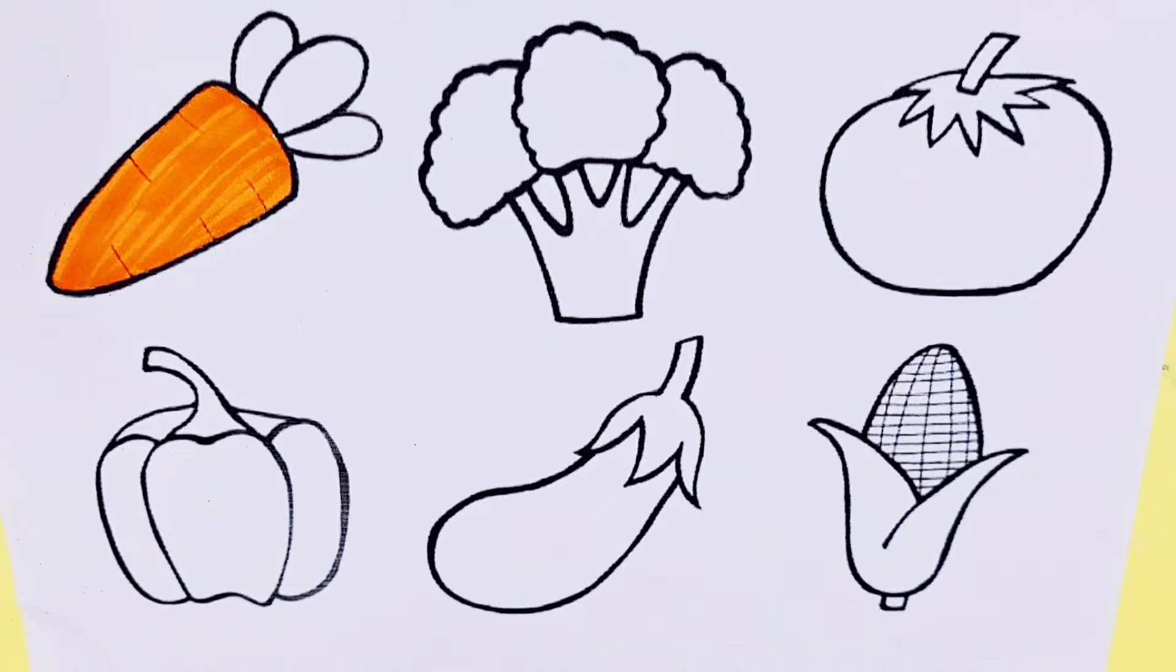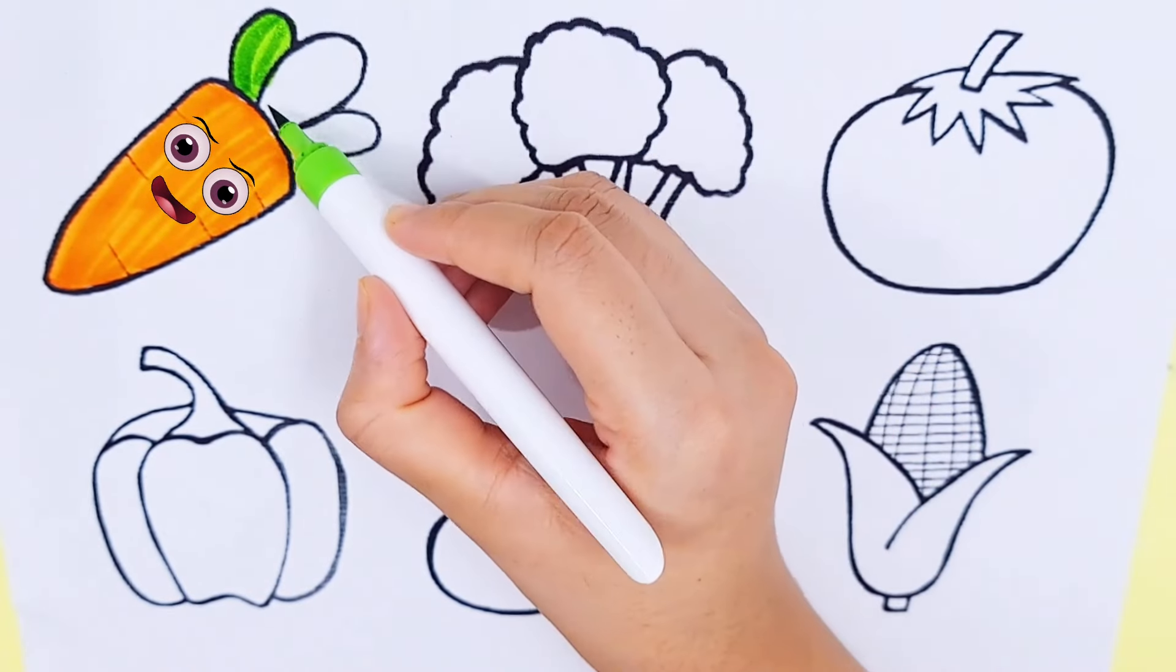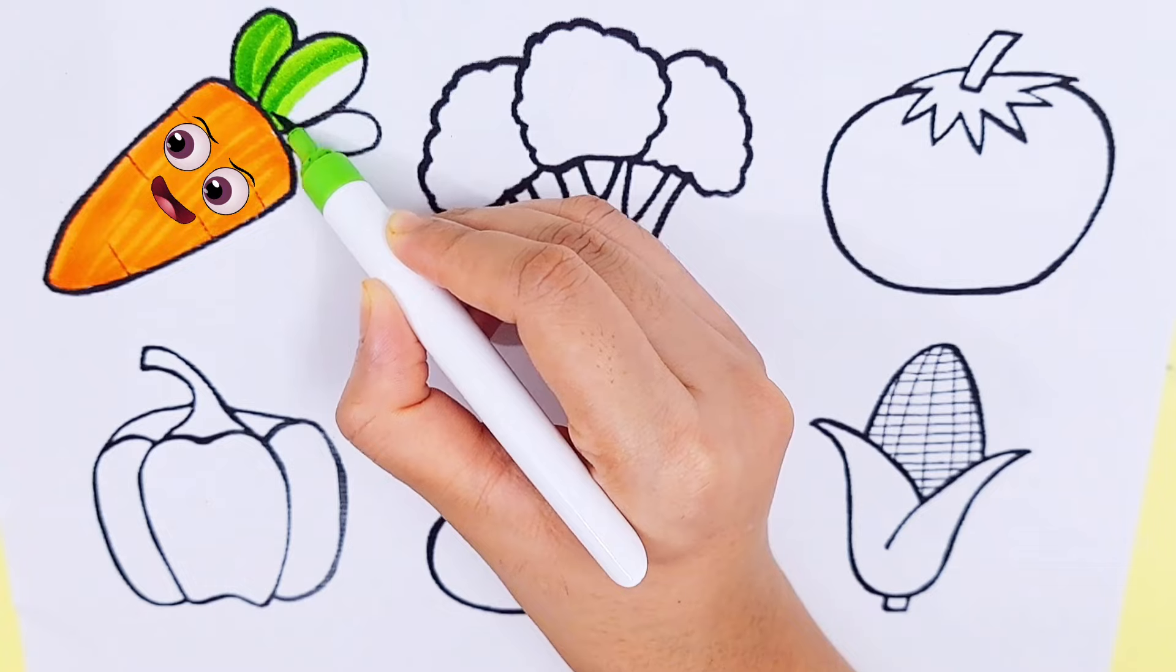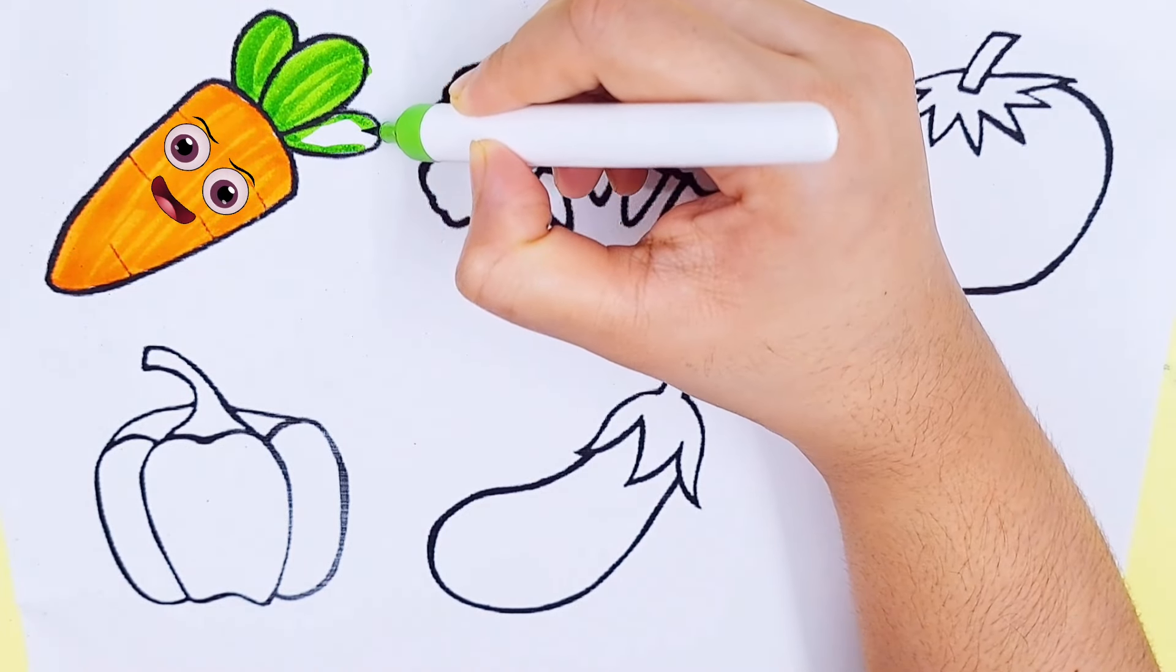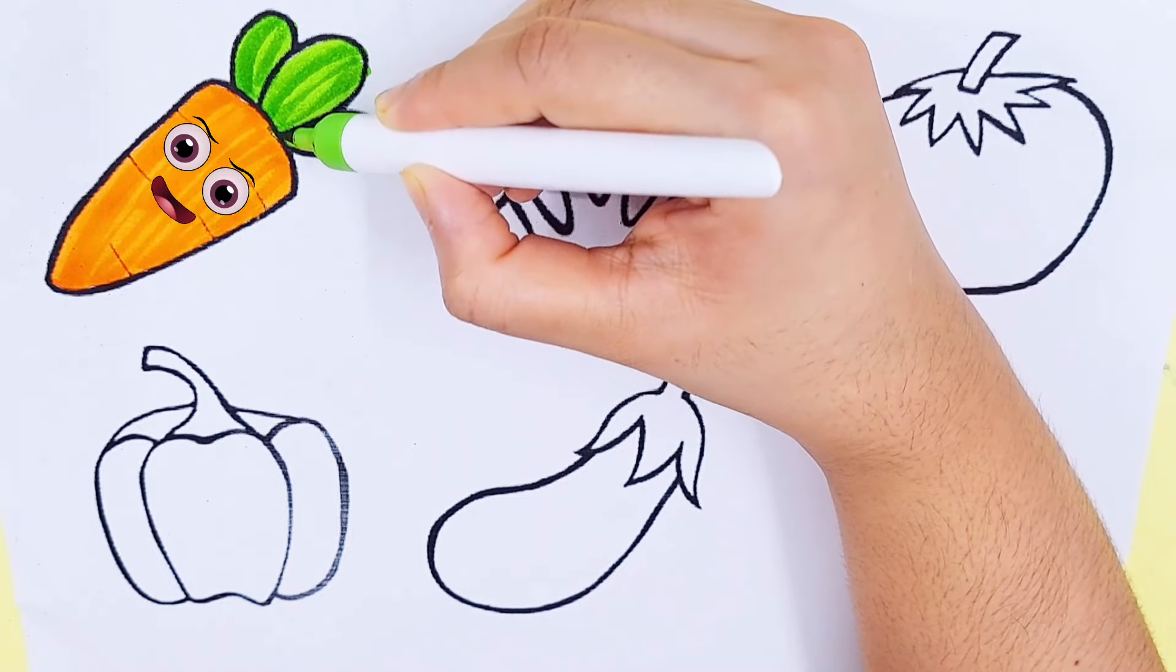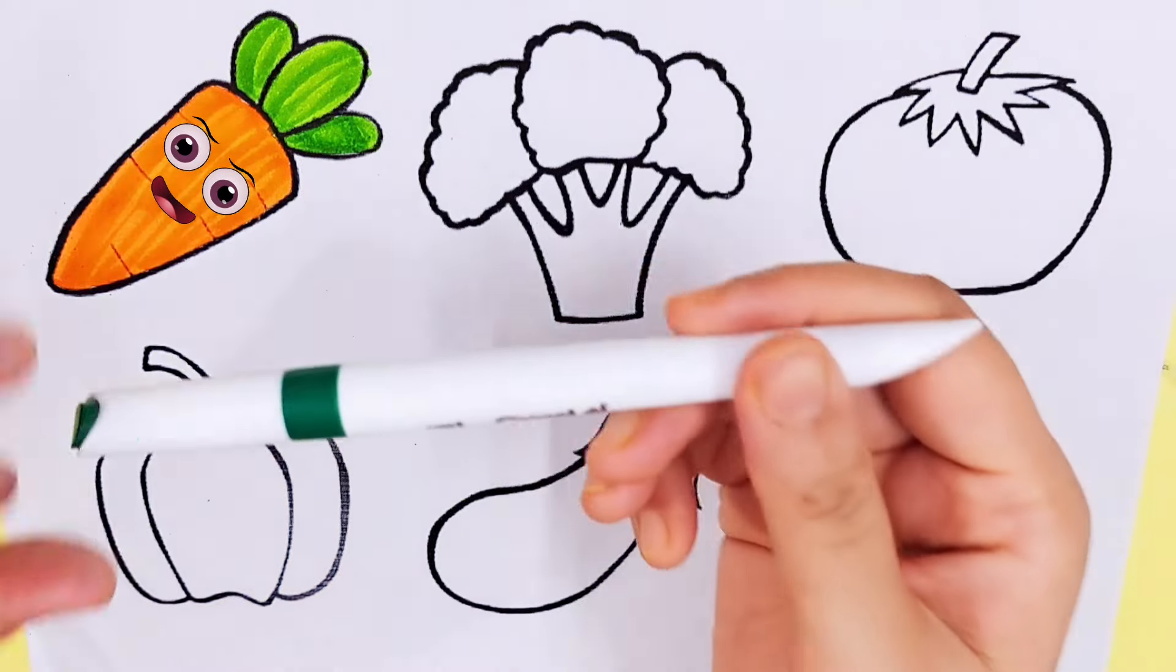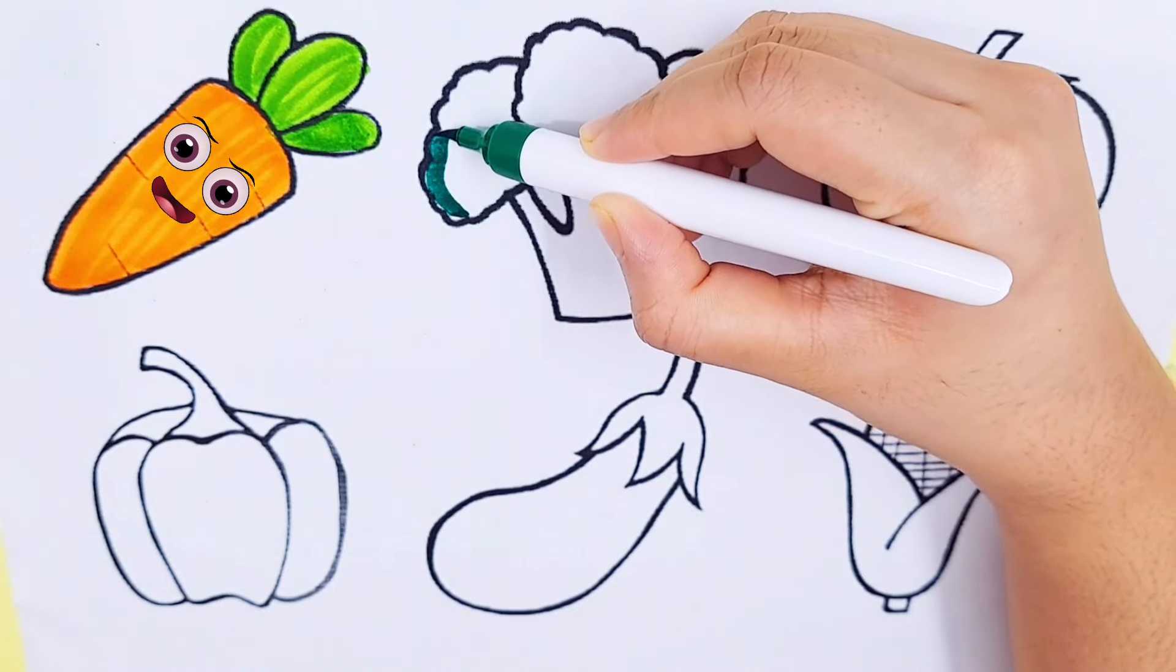Dark green color, broccoli. Broccoli is green color.